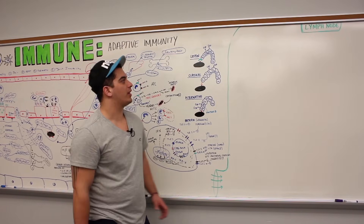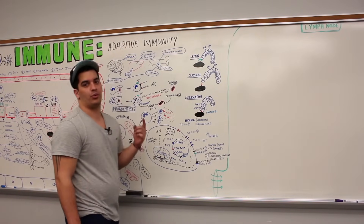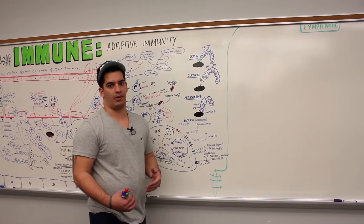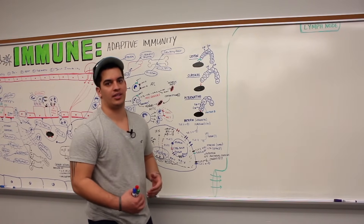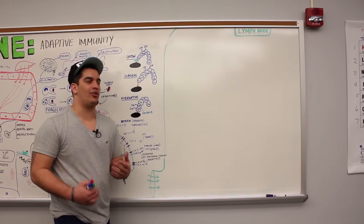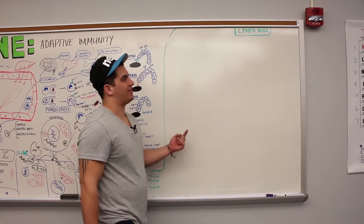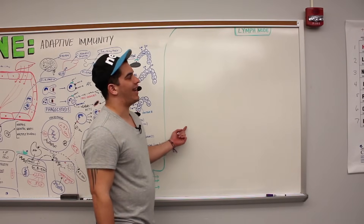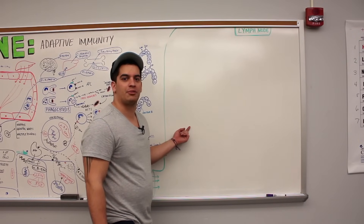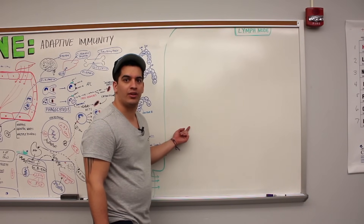All right Ninja Nerds, in this video we're going to talk about adaptive immunity. We've already talked a lot about the inflammatory response in very great detail. Now we're going to take a look specifically inside of the lymph node. If you remember, we had those macrophages and those neutrophils.